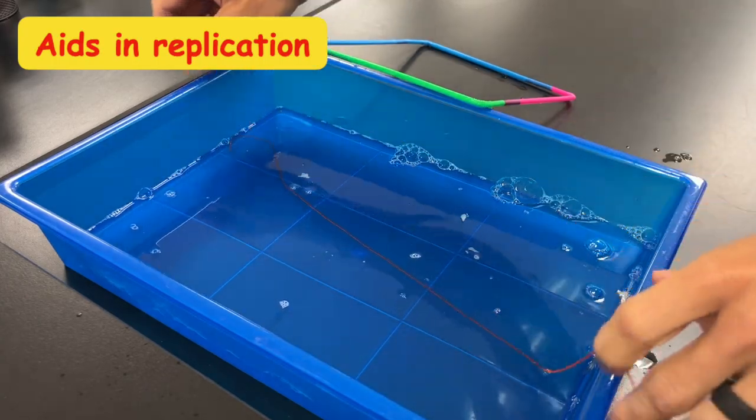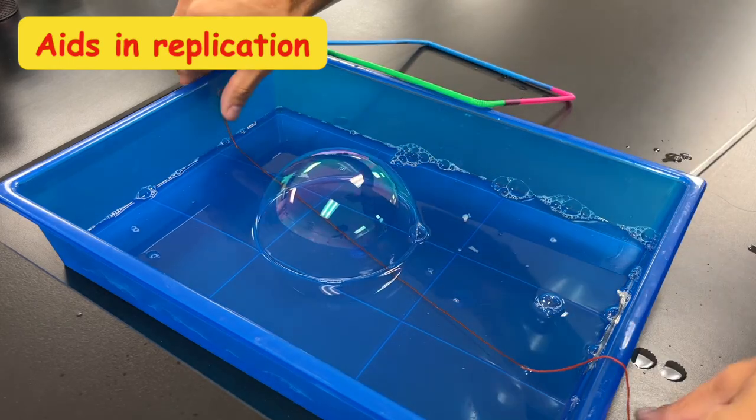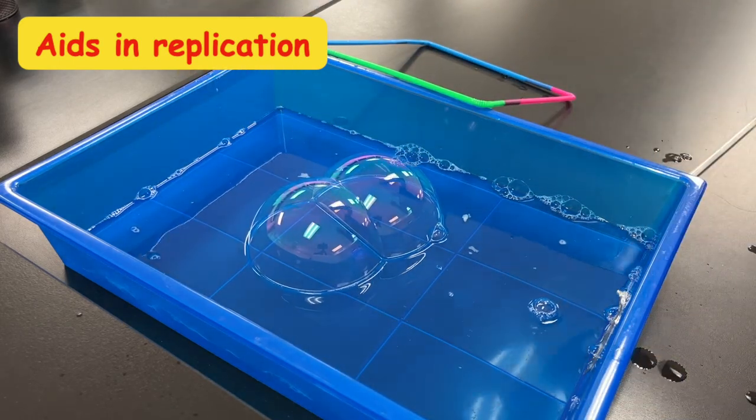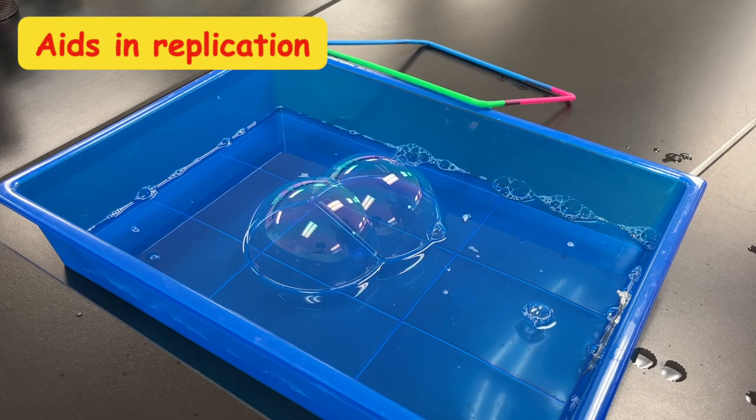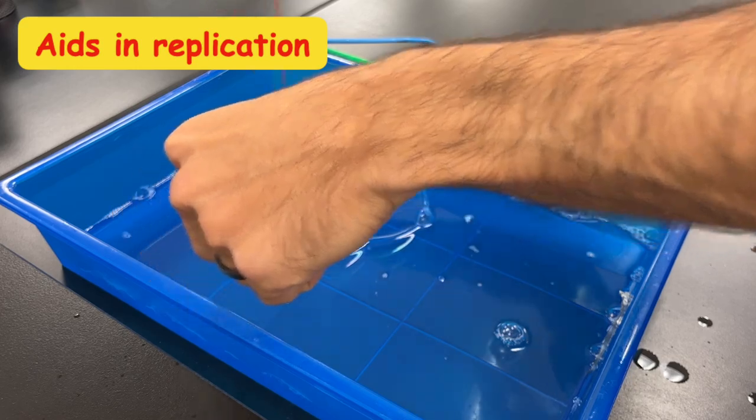You can use a string to demonstrate how the membrane is important for cell replication. So if you make a bubble and pull it through the bottom, you'll split it into two and then you can repeat this over and over and show how you can make more and more bubbles or more and more cells through this process.